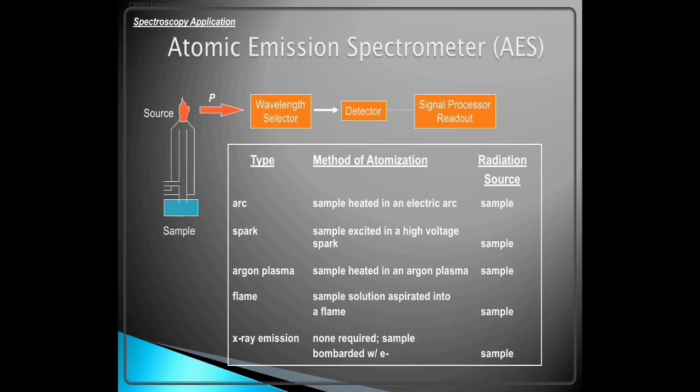Atomic emission spectrometer AES. Types and method of atomization: arc, sample heated in an electric arc. Spark, sample excited in a high voltage spark. Argon plasma, sample heated in an argon plasma. Flame, sample solution aspirated into a flame. X-ray emission: none required, sample bombarded.